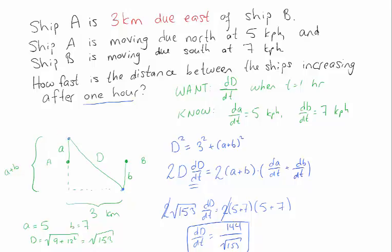So one thing you can do to check that this is reasonable is to see that this should be strictly less than 5 plus 7, which is 12. And indeed it is, because 144 is 12 squared. So 144 divided by the square root of 144 would be 12. And this is less than 144 divided by the square root of 144.